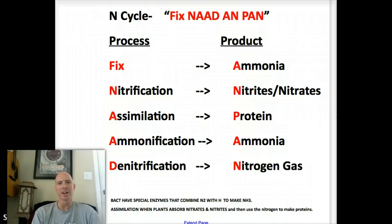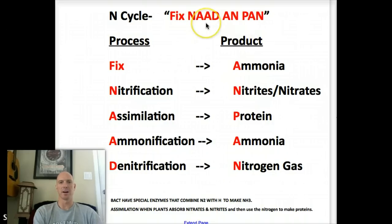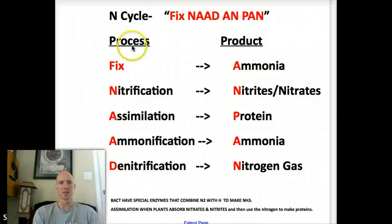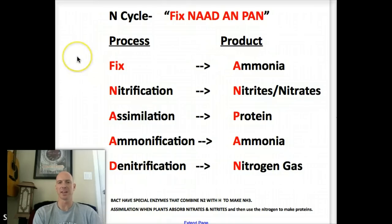And it's our first mnemonic. It's called Fix, NAD, and Pan — with a double A there. What I'd recommend that you do is set up your paper with the process on one side, product on the other side. And I'm going to show you how this works. I think it'll be a good tool for you.